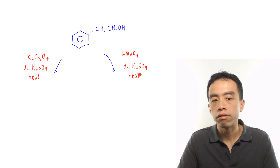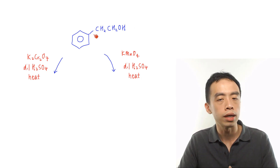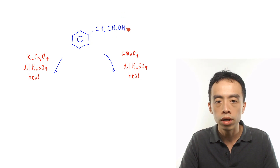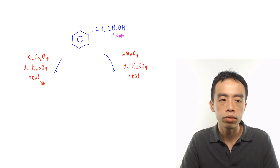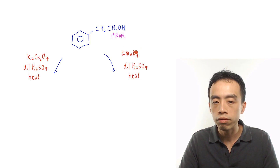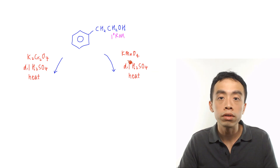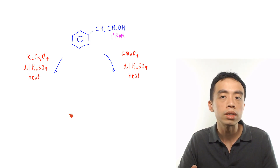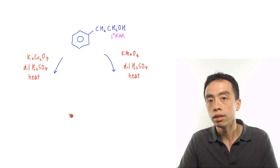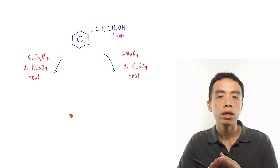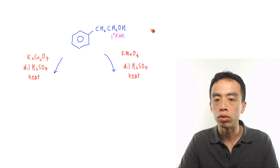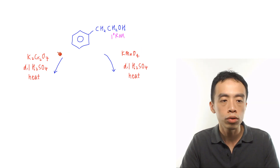Here is a bonus question. What if I have benzene attached to a CH2CH2OH — a benzene ring with a primary alcohol side chain — and I want to oxidize it using either K2Cr2O7 in dilute H2SO4 heat under reflux, versus KMnO4 in dilute H2SO4 heat under reflux? Is there a difference in the product? Different oxidizing agents have different strengths, so KMnO4 is a stronger oxidizing agent than dichromate, and we need to be clear which functional groups each one oxidizes.